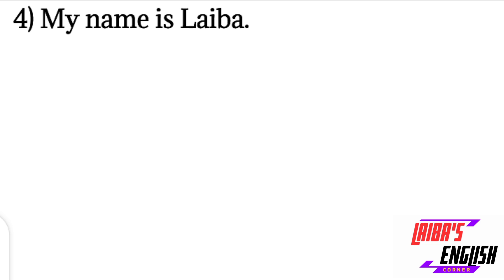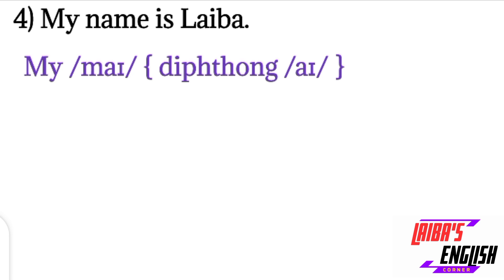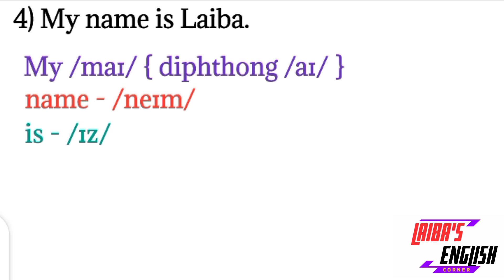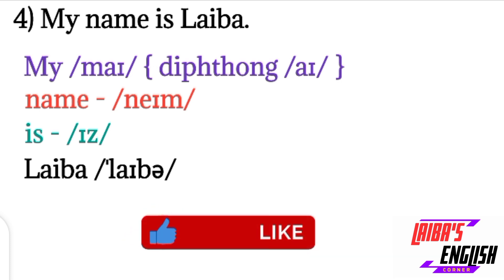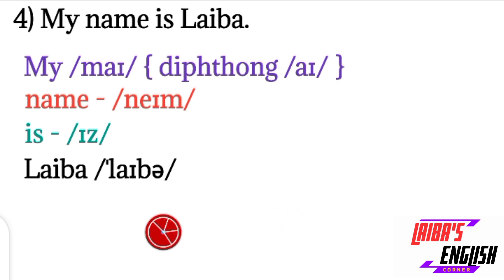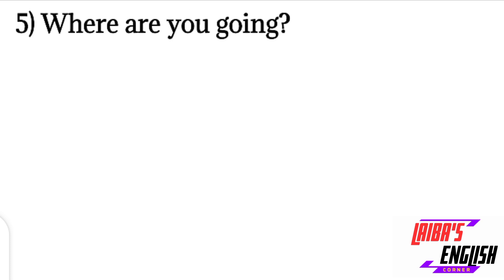We have practiced 'my,' 'name,' and 'is' before — only the word 'Laiba' is new. 'My' is represented with M and the 'I' diphthong. 'Name': N sound, 'ey' sound like in play, ending with M. 'Is' will be represented by the 'e' sound and Z sound. For 'Laiba' — names are always stressed — there is the 'I' diphthong sound, B sound, and a schwa sound at the end. My name is Laiba.